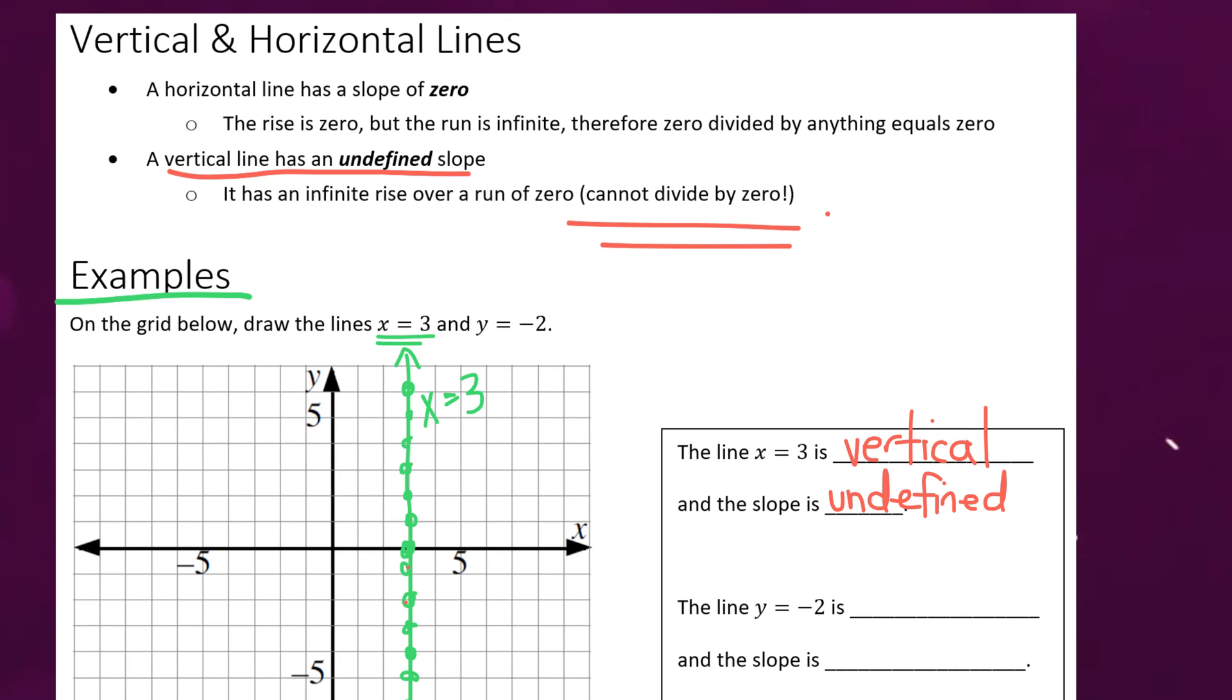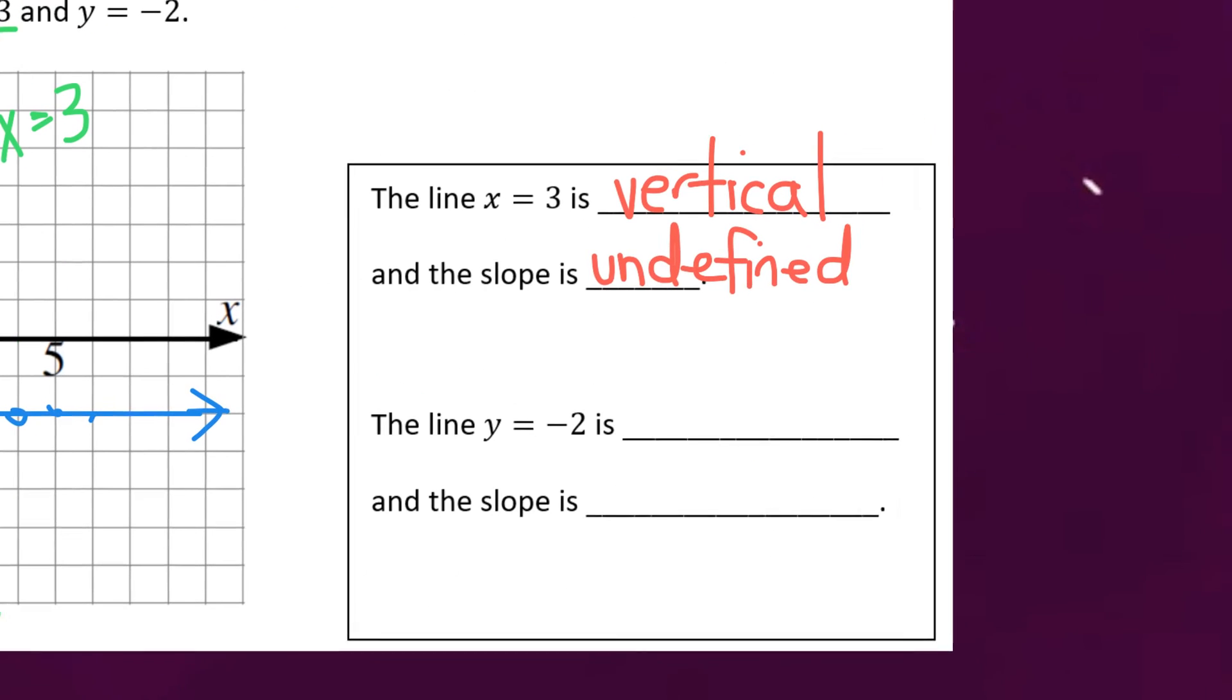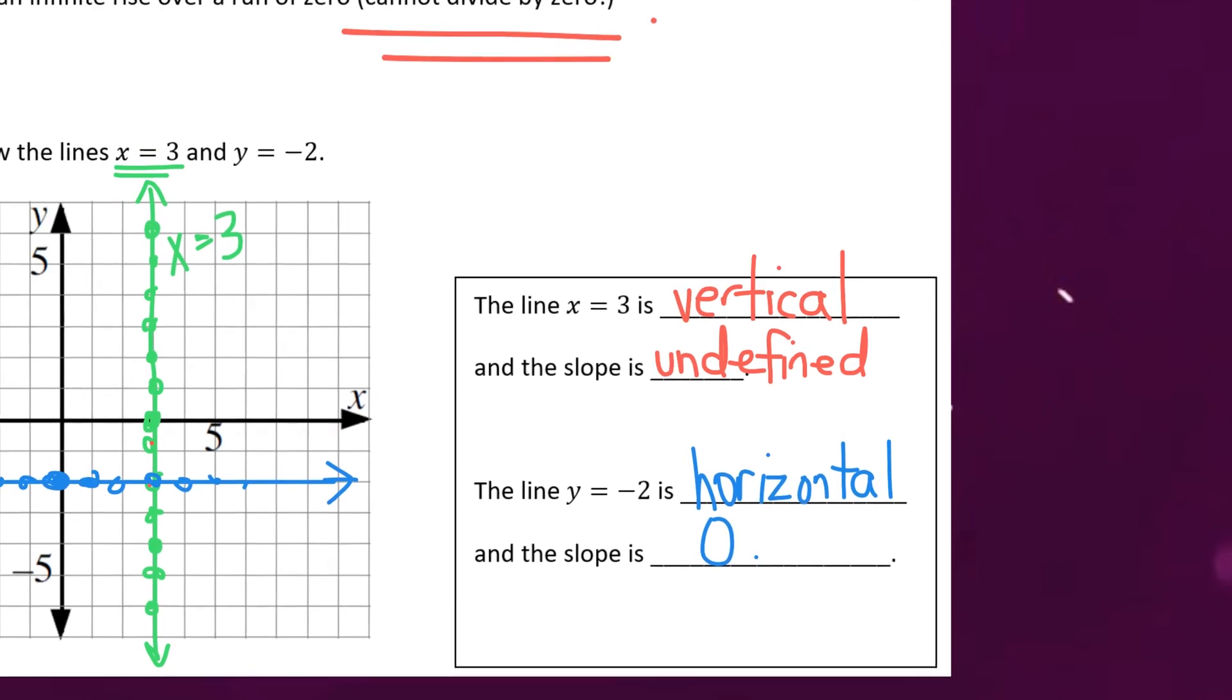Okay, next let's look at the line y equals negative two. So now we're going to be drawing points everywhere along this line, because all of these points have a y value of negative two. So it's going to form a horizontal line that goes through the y axis at negative two. So we're going to write down that this forms a horizontal line. And in this case, the slope is zero.